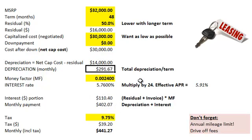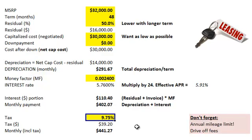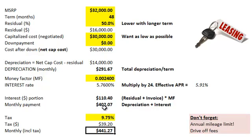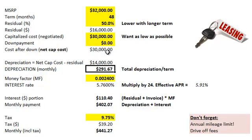We did the depreciation portion and the interest portion, so we get the monthly payment by adding those two together. In my example, the monthly payment is $402.07. Generally we'll need to add tax onto the monthly payment — here in California it's nine and three quarters percent, so that's another $39.20, giving us the total monthly payment on the lease. The point again is to break it up so we understand that what we're paying monthly is a function of two components — the interest and the depreciation — because we want to make sure we're not paying above-market interest, and the depreciation is largely a function of that residual value.